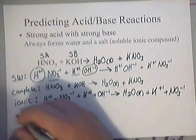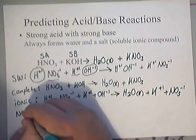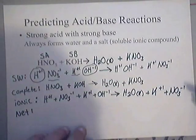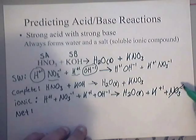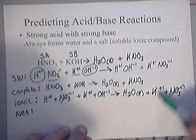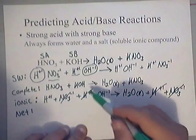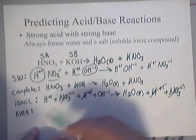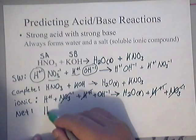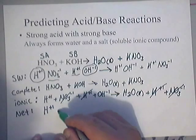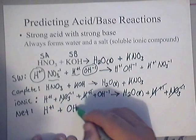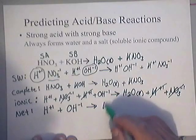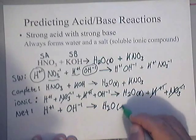And if you wanted the net ionic, remember to cancel out your spectator ions, which you have NO3 negative one on both sides, and you've got K plus one on both sides. So that just leaves behind a net ionic equation of pretty much just water. H plus one, plus OH negative one, yields H2O liquid.